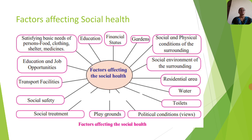Factors affecting Social Health — social health is affected due to many factors. It may be education, financial status, gardens, social and physical conditions of the surrounding, social engagement of the surrounding, residential area, water, toilets, political conditions, playgrounds, social treatment, social safety, transport facilities, education and job opportunities, and satisfying basic needs of persons such as food, clothing, shelter and medicines.